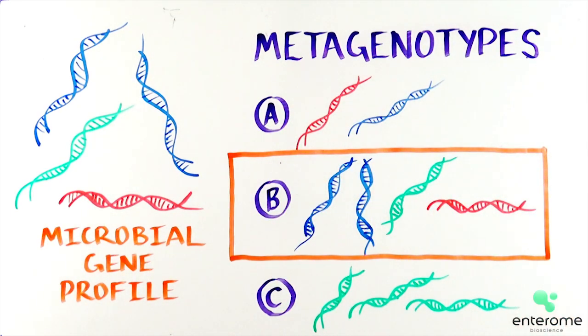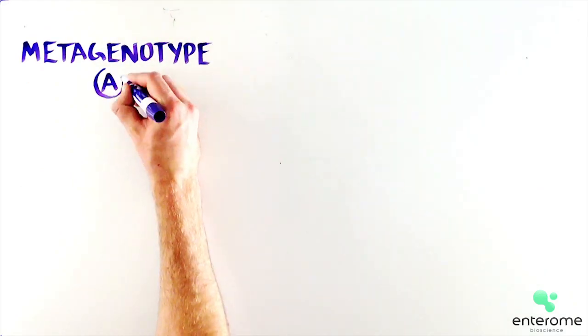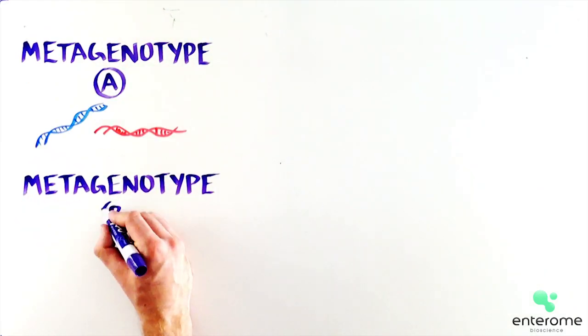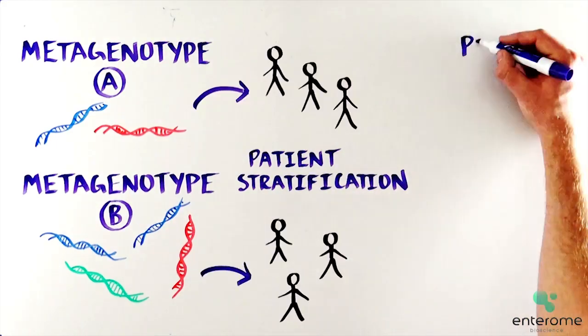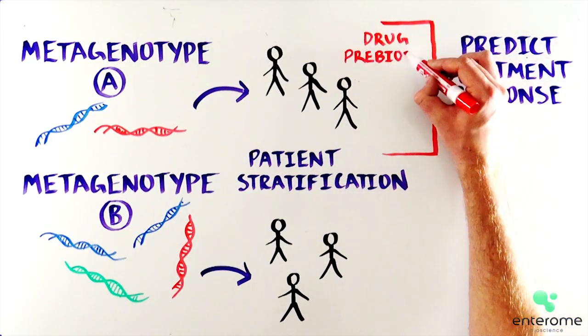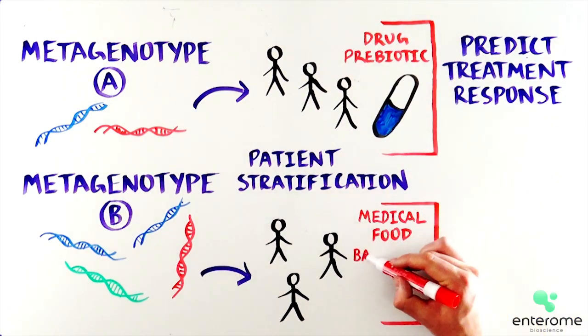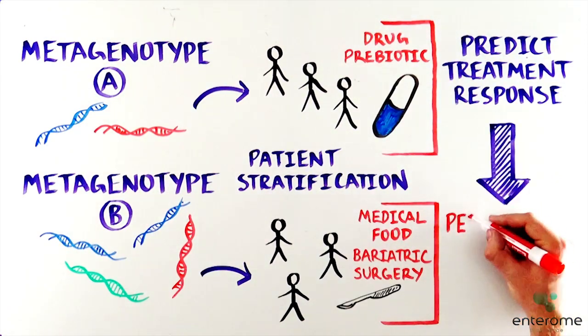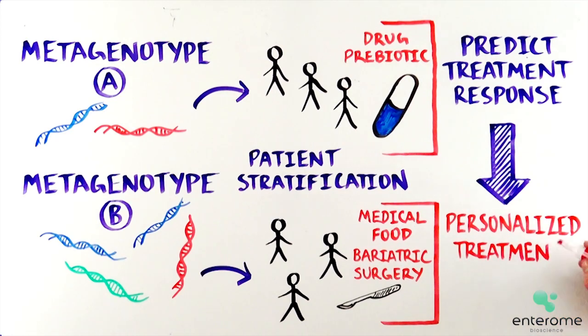These metagenotypes may be associated with particular disease profiles and clinical data, which can be used as a tool to stratify patients and predict the efficacy of a medical intervention, such as a drug, prebiotic, medical food, or bariatric surgery. This will help the doctor design an effective, personalized treatment plan.